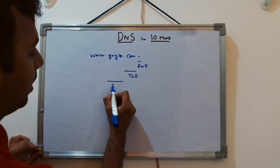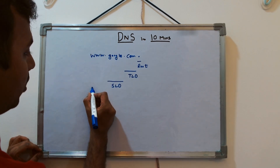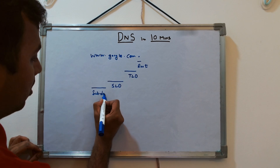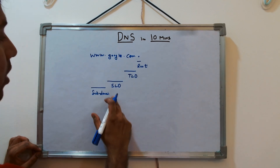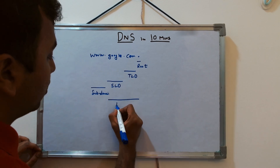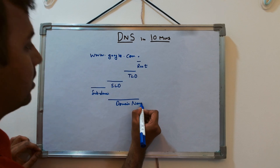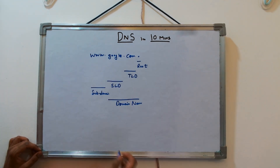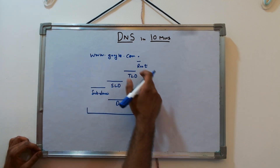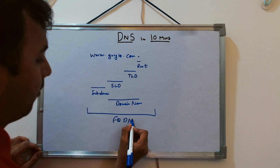Then you have 'google', which is the SLD — second level domain — and 'www' is known as your subdomain. Your SLD and TLD together are known as the domain name. So when we say 'domain name', we mean google.com.